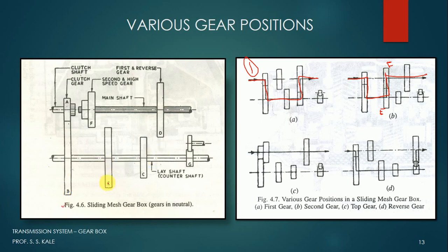In second gear, the diameter of E is bigger than that of F. So when power is transmitted from E to F, there is a speed increment — increased speed is given to F, and since F is in spline connection with the main shaft, the main shaft speed is very high. That is the second gear position.